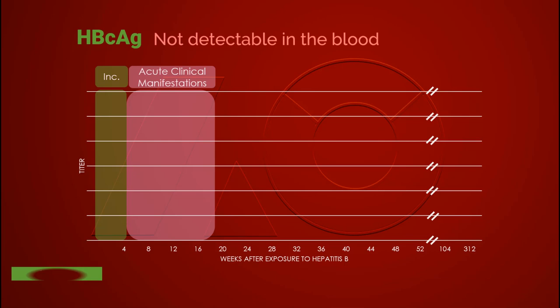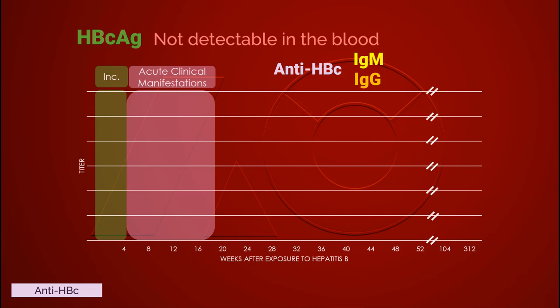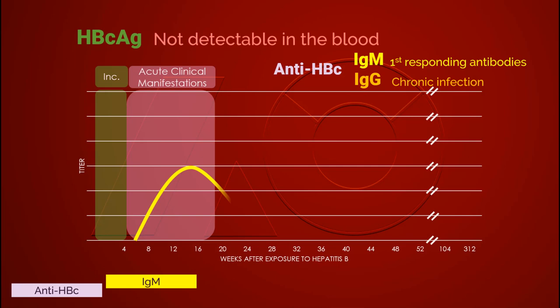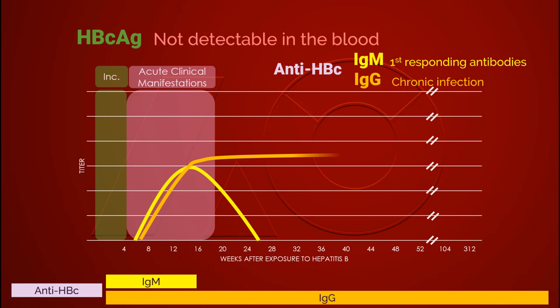Hepatitis B core antigen is not detectable in the blood; its existence is indirectly proven by the presence of anti-hepatitis B core antibodies. There are two types: IgM and IgG. IgM is the first antibody responding to the infection, while IgG appears later and lasts longer into the state of chronic infection. Hepatitis B core IgM is especially useful as an indicator for acute hepatitis B infection during the window period in which hepatitis B surface antigen has disappeared yet hepatitis B surface antibody hasn't developed. Hepatitis B core IgG is the antibody that remains in the blood for the longest time after recovery from hepatitis infection.